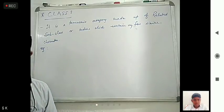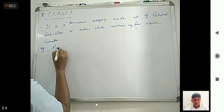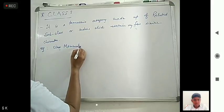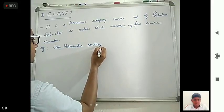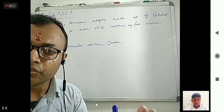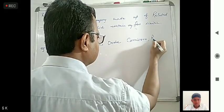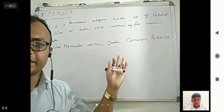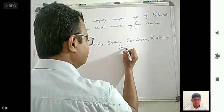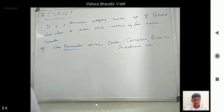For example, Class Mammalia contains orders like Carnivora, Rodentia, and Insectivora. In plants, Class Monocotyledoneae contains subclasses such as Alismatidae.